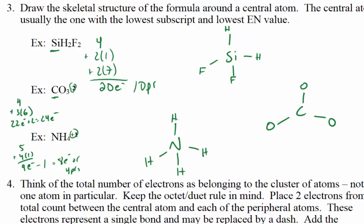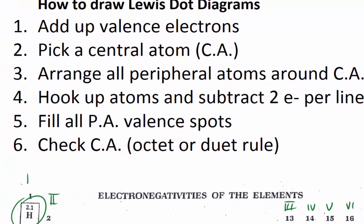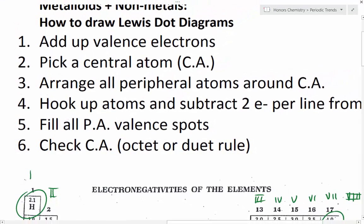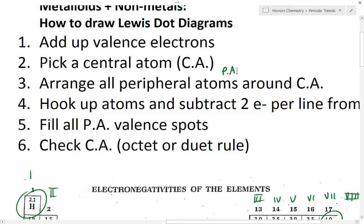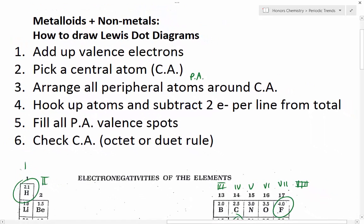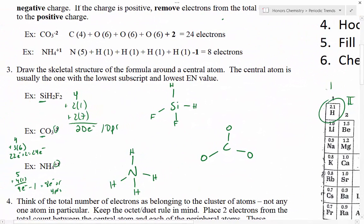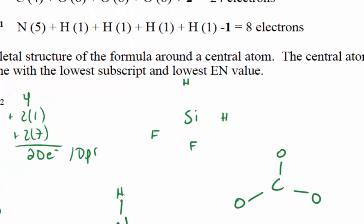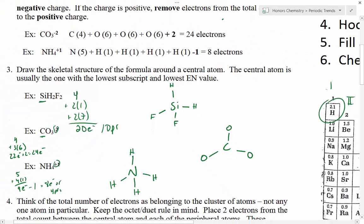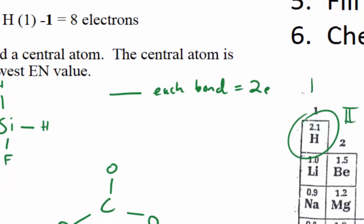Once we've drawn these, the next thing we're going to do is arrange all of our atoms around the central atom. Then we hook up all the atoms together and subtract two electrons per bond from your total. These atoms in my molecule are bonded together, so I've connected them with a dash which represents a bond between those two atoms. Each little line is going to account for two electrons — each bond equals two electrons that are being shared.